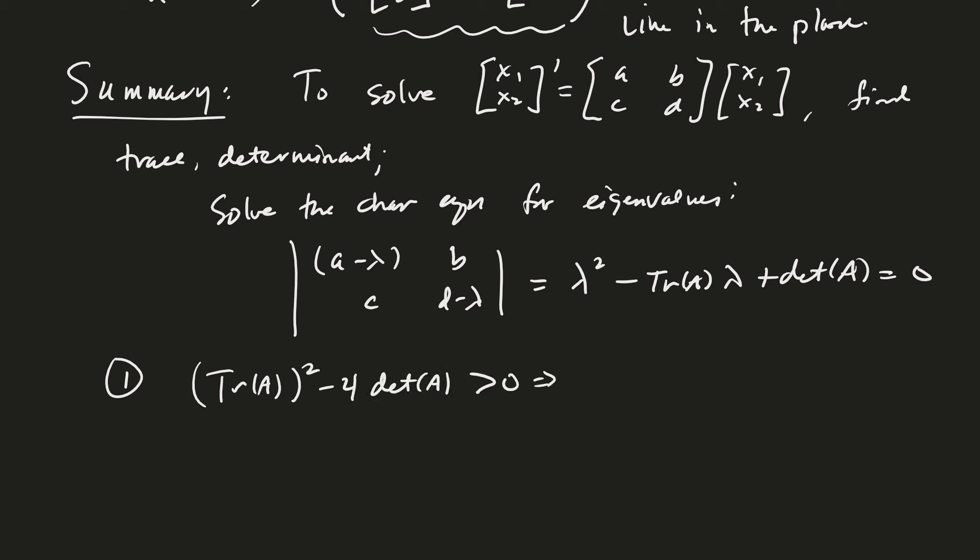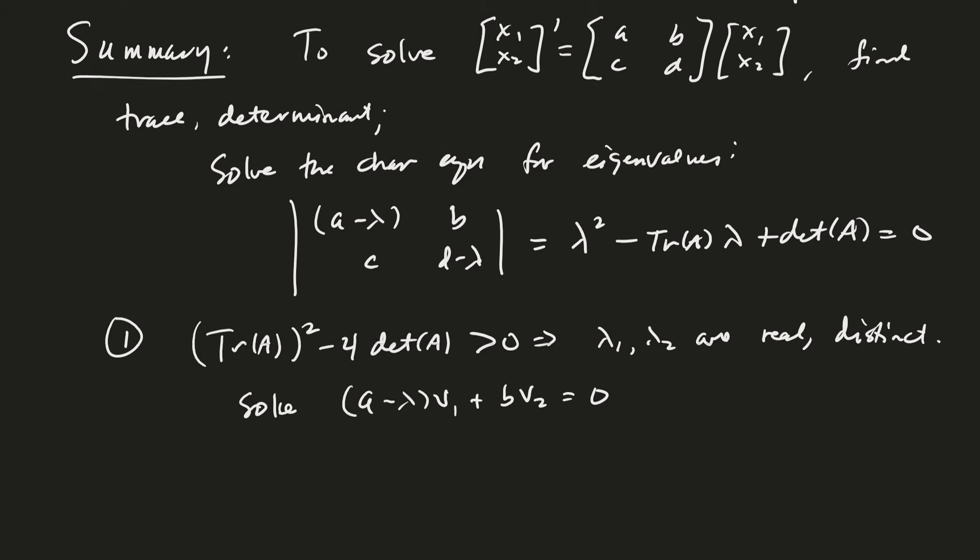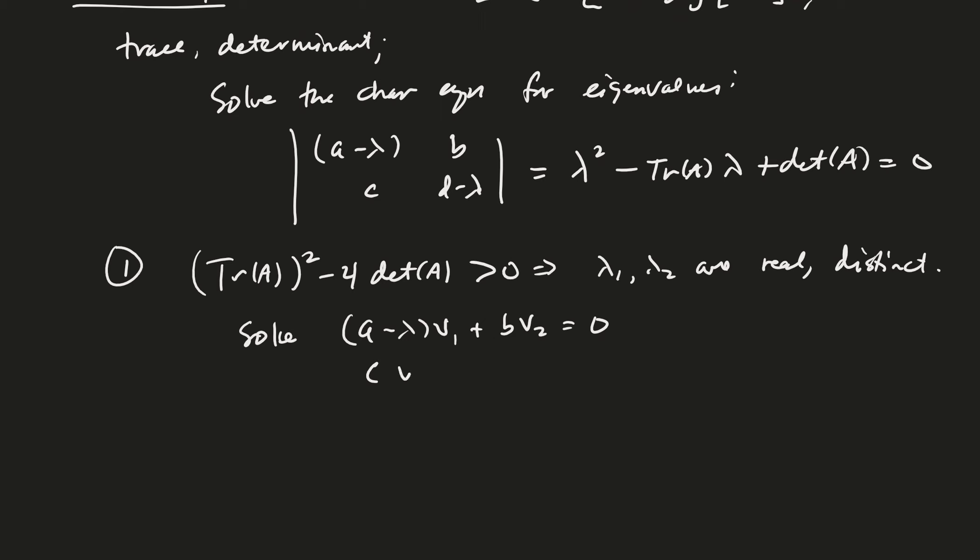then we have lambda 1 and lambda 2 are real and distinct. And so then we solve our system of equations. So, a minus lambda, v1 plus b, v2 equals 0. c, v1 plus d minus lambda, v2 equals 0. For vector v.